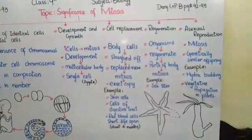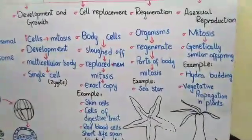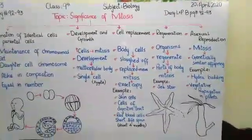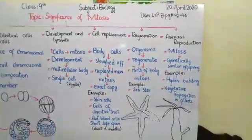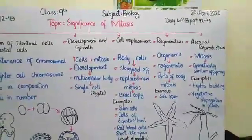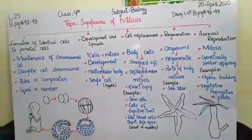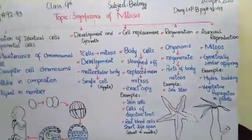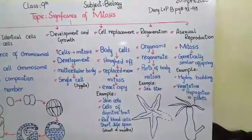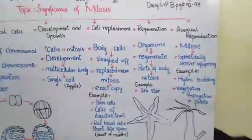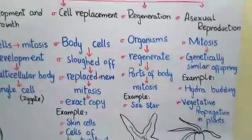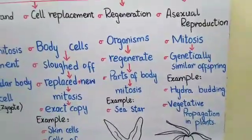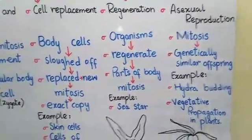The fifth and last significance of mitosis is asexual reproduction. There are two types: sexual and asexual. In sexual reproduction, two parents are involved, and their gametes fuse to form the next organism, which is not exactly like either parent due to genetic variations. In asexual reproduction, only a single parent is involved and the offspring is a complete copy of the parent. Mitosis is the means of asexual reproduction.